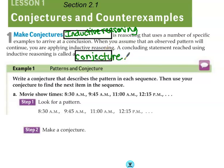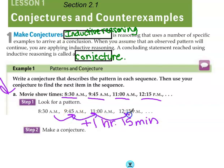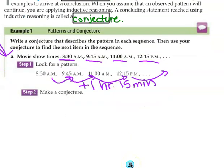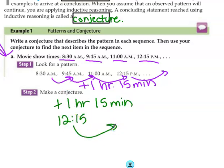So if I have to do the dishes every other day, you could figure out what the next day was based on the pattern. We're going to write a conjecture based on this information about the showtimes. Here are our showtimes. We need to figure out what is the difference between them. If we look at 8:30 to 9:45, that is an hour and 15 minutes. Now let's see if that pattern keeps happening. Yep, an hour and 15, an hour and 15. So we need to figure out what the next time would be. If we follow this pattern of one hour and 15 minutes from 12:15, the next showtime would be 1:30 p.m. So that would be our conjecture.